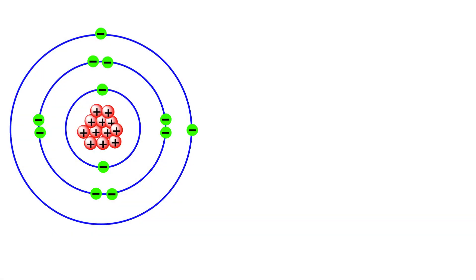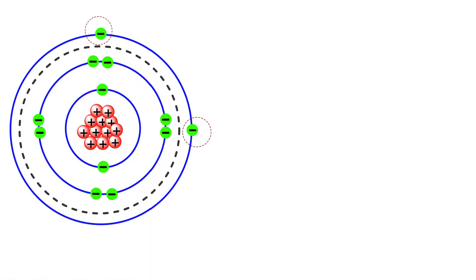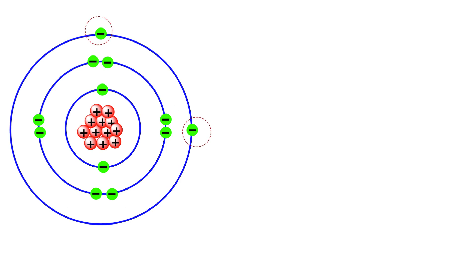Consider the atom of magnesium. In the nucleus of magnesium, there are 12 protons that have positive charges. Magnesium has 10 inner electrons and 2 electrons on the outermost energy level. Electrons on energy levels have negative charges, and the positive charges of protons attract the negative charges of electrons.